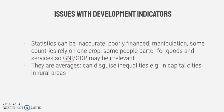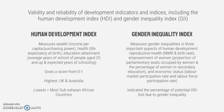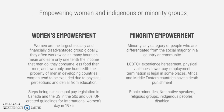What are some issues that these indicators might have? The statistics can be inaccurate, poorly financed, or manipulated. Some countries only rely on one crop, and some people barter for goods and services, making GNI or GDP irrelevant. These are also averages, so they can disguise inequalities — for example, capital cities tend to have a higher standard of living than rural areas, but an index like this would not really distinguish between those two.